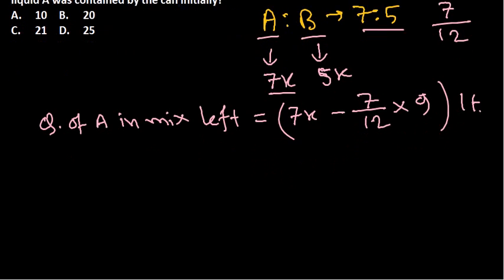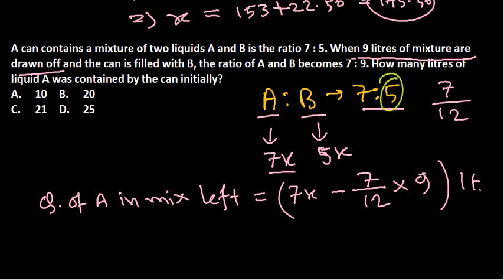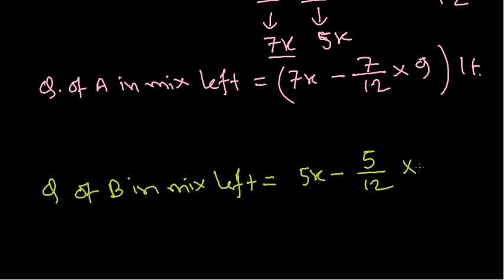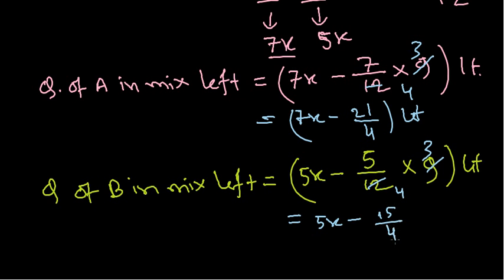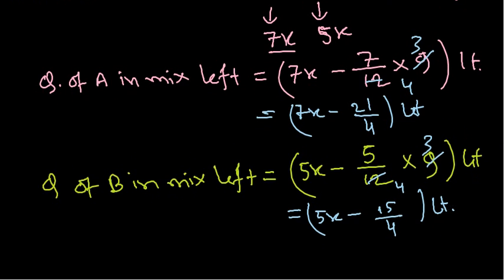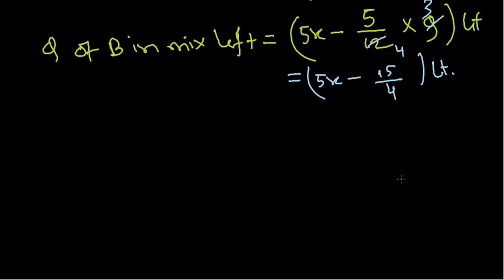Similarly, for the quantity of B left in the mixture: it is 5x minus (5/12) × 9. Working out the values, the quantity of A remaining is 7x − 21/4 liters, and the quantity of B remaining is 5x − 15/4 liters.